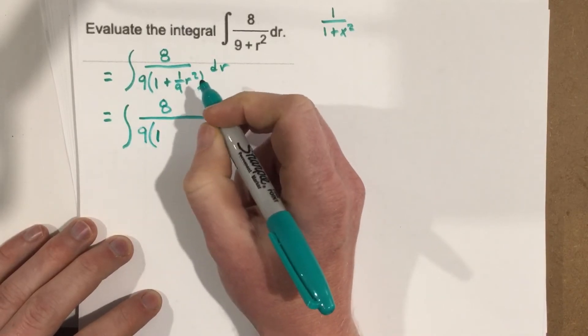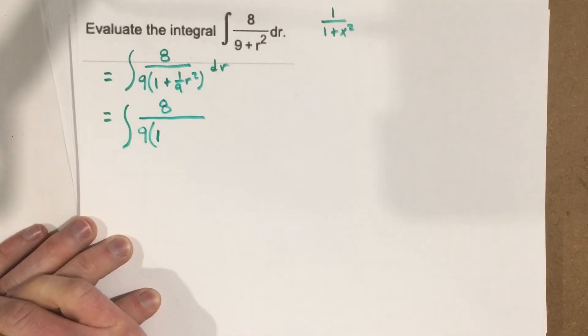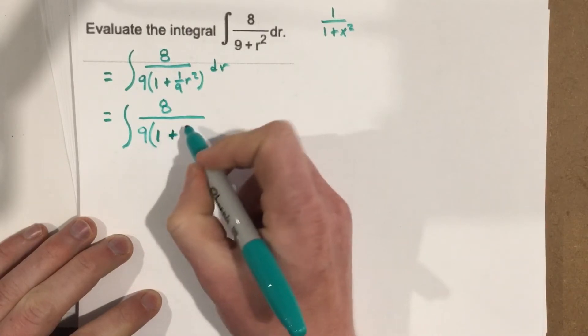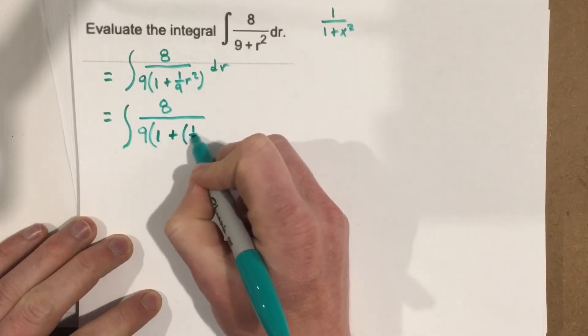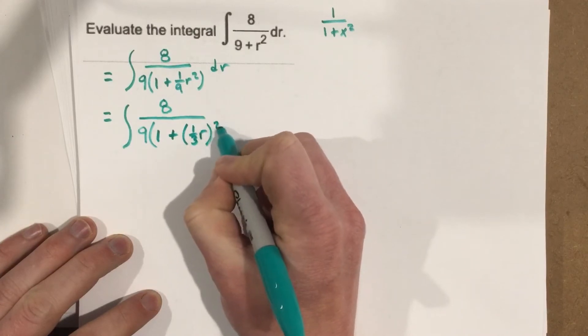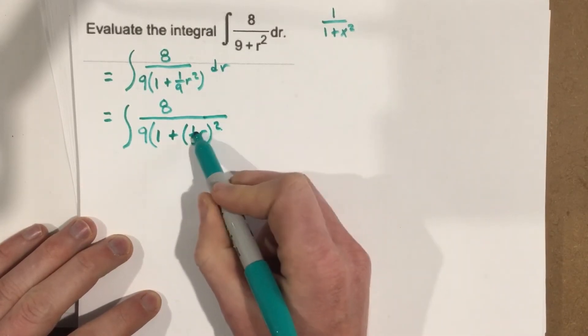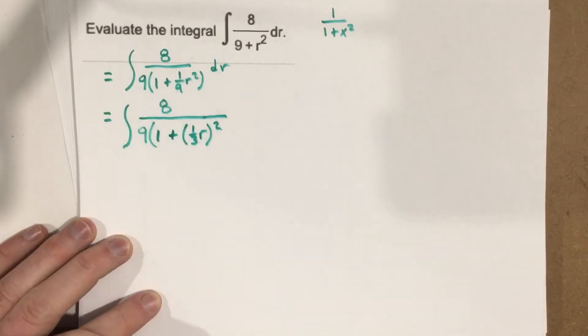...so that this 1 9th is part of the square. What would I have to multiply by itself to give me 1 9th? Well, that would be 1 3rd. So I'm going to have plus parentheses 1 3rd r squared. Now you can see if I do 1 3rd r squared, that's 1 9th r squared, which is what we have right there.